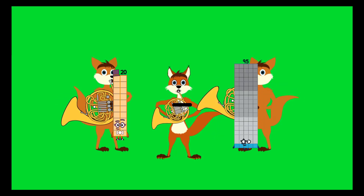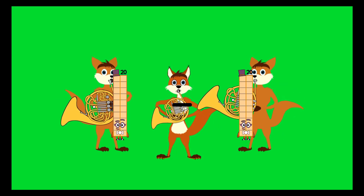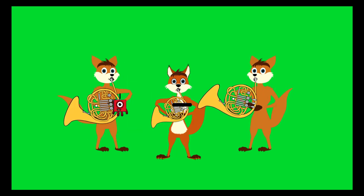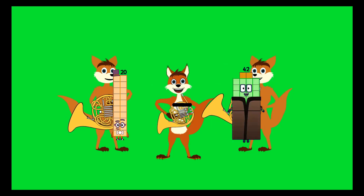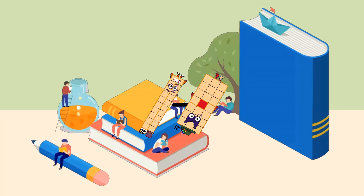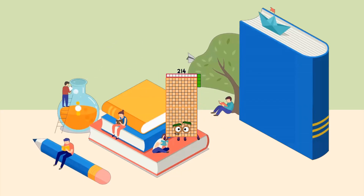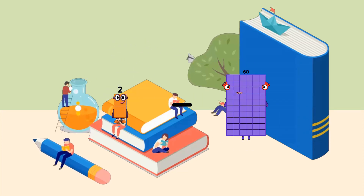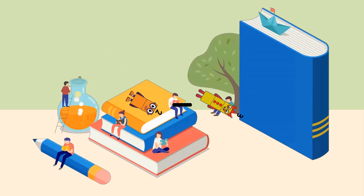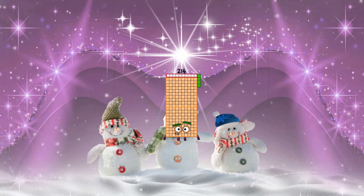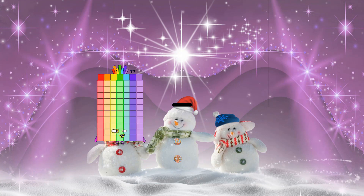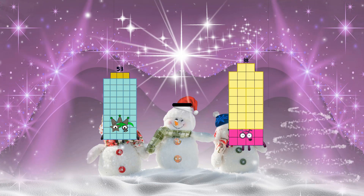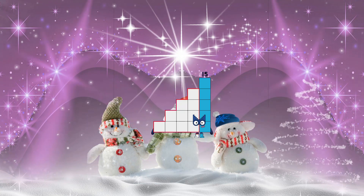20 minus 20 equals 0. 20 minus 21 equals 214. 2 minus 3 equals 214. 53 minus 38 equals 15.